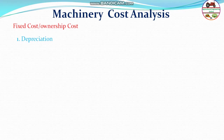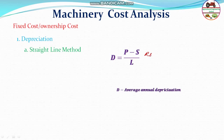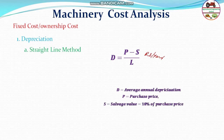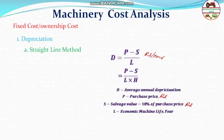Coming to depreciation, there are different methods to calculate the depreciation value, which is reduced each year. The first is the straight-line method, where D is the depreciation cost in rupees per year. It can be calculated as: D equals (P minus S) divided by L, where P is the purchase price in rupees, S is the salvage value which is 10% of the purchase price, and L is the economic life in years. This gives depreciation in rupees per year. To get rupees per hour, divide by H, the working hours per year.